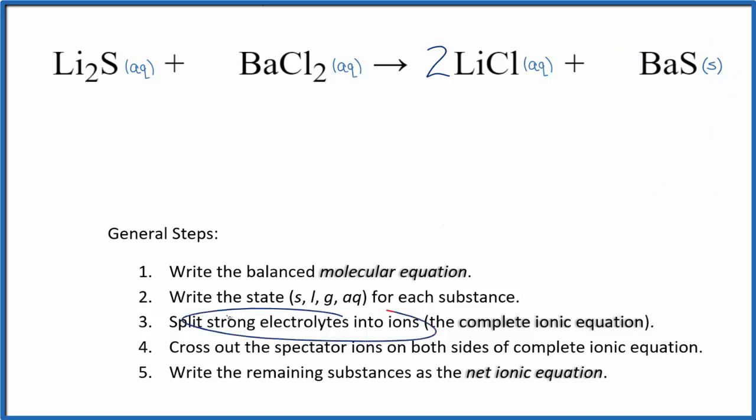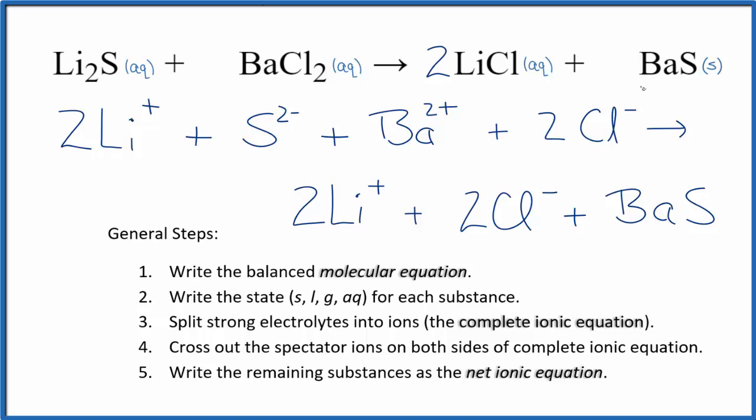Now we're going to split all the strong electrolytes into their ions for the complete ionic equation. Notice we didn't split apart the solid, the barium sulfide. We kept that together. So everything else we split apart.